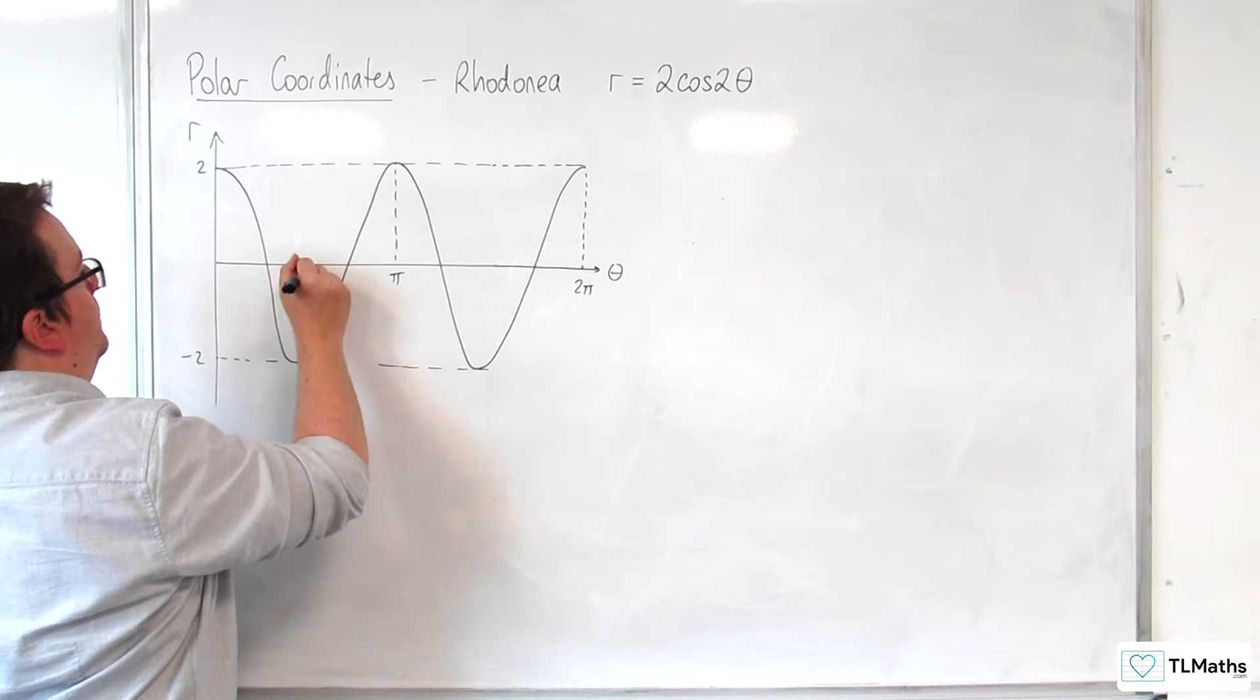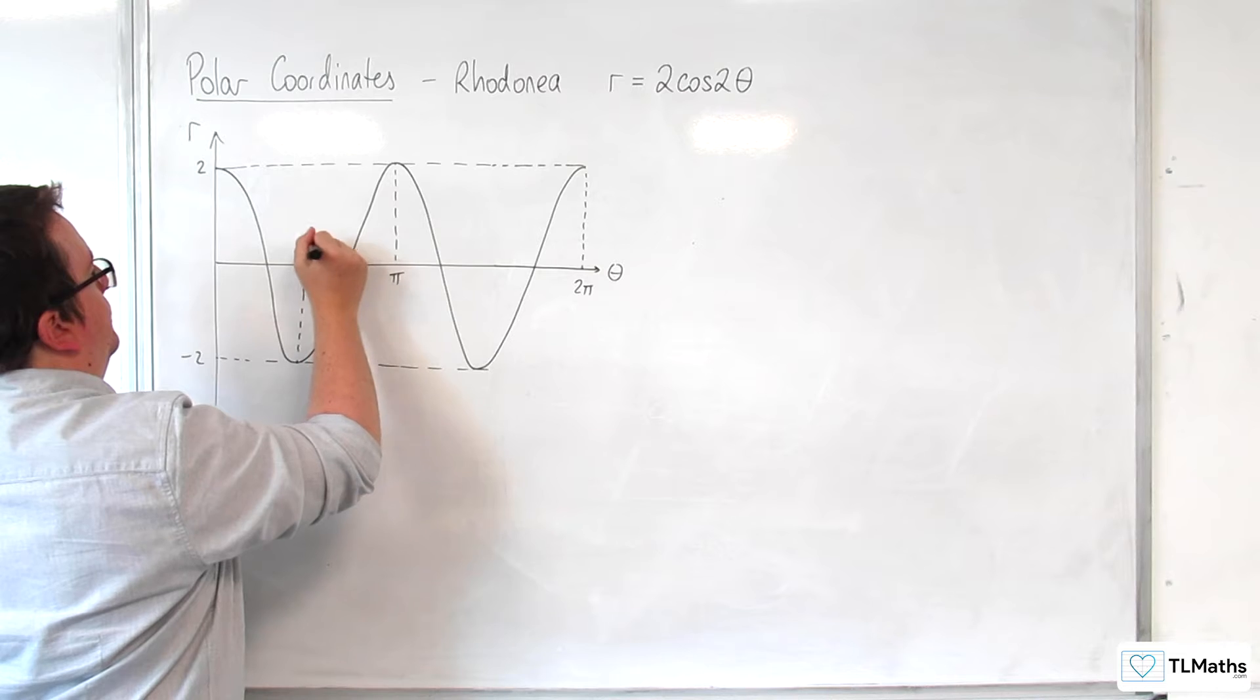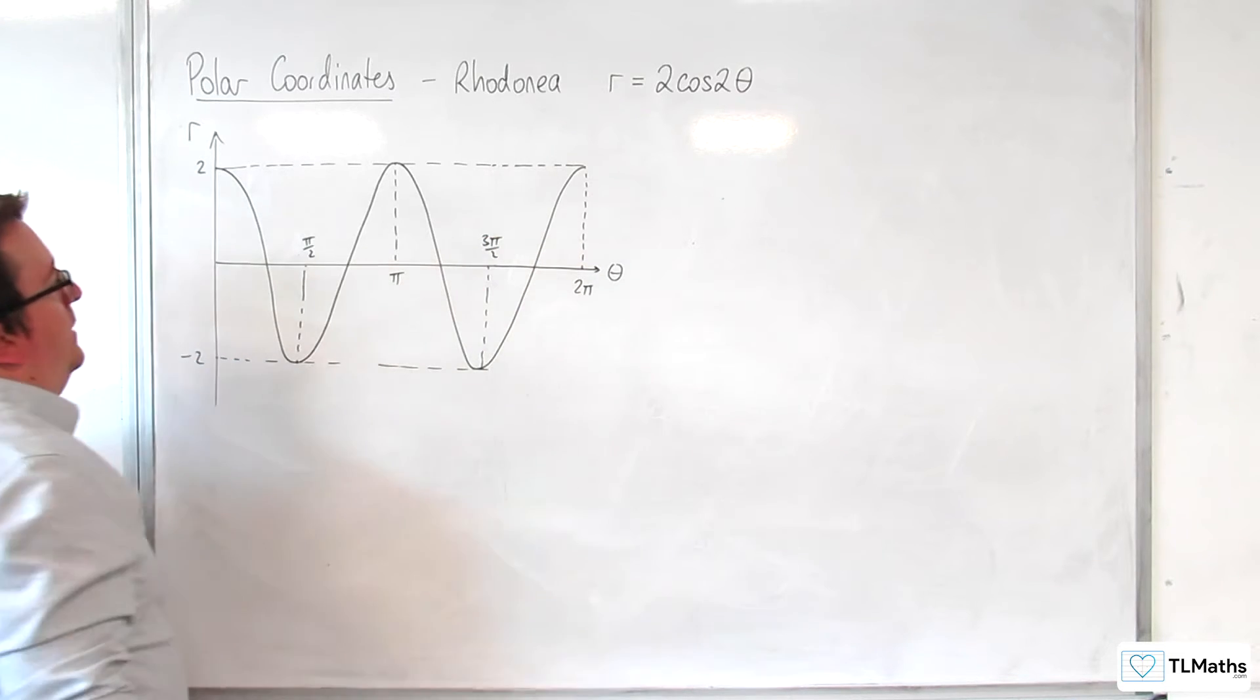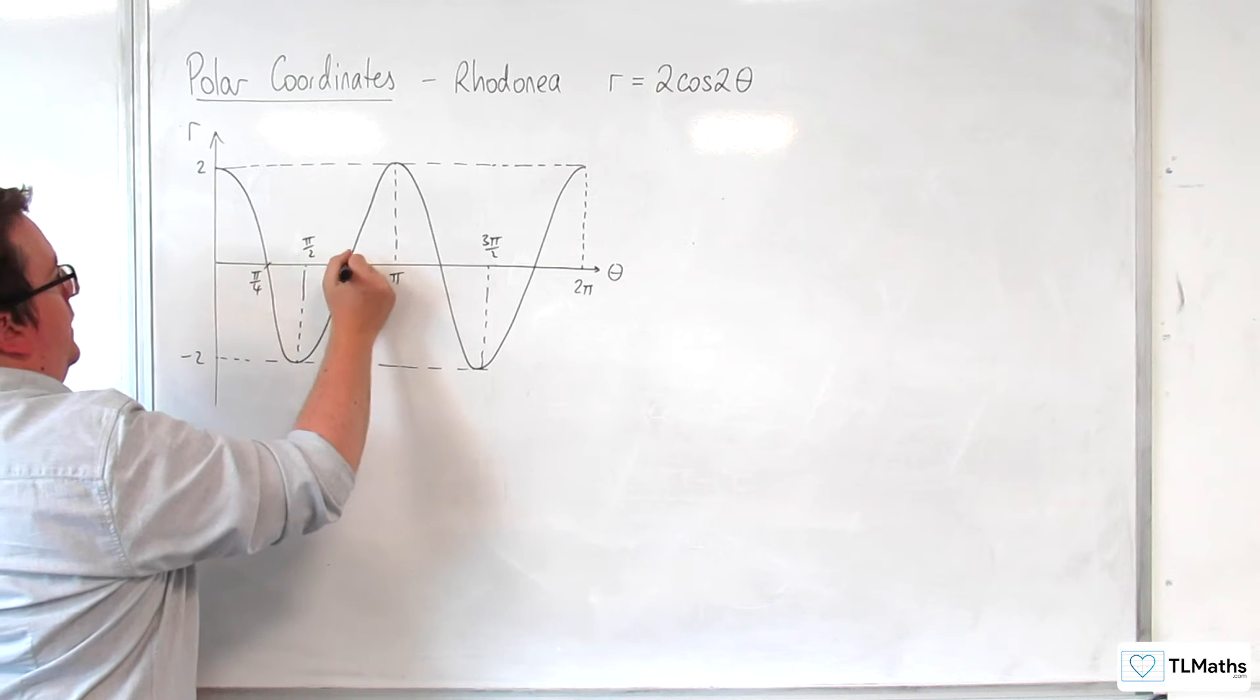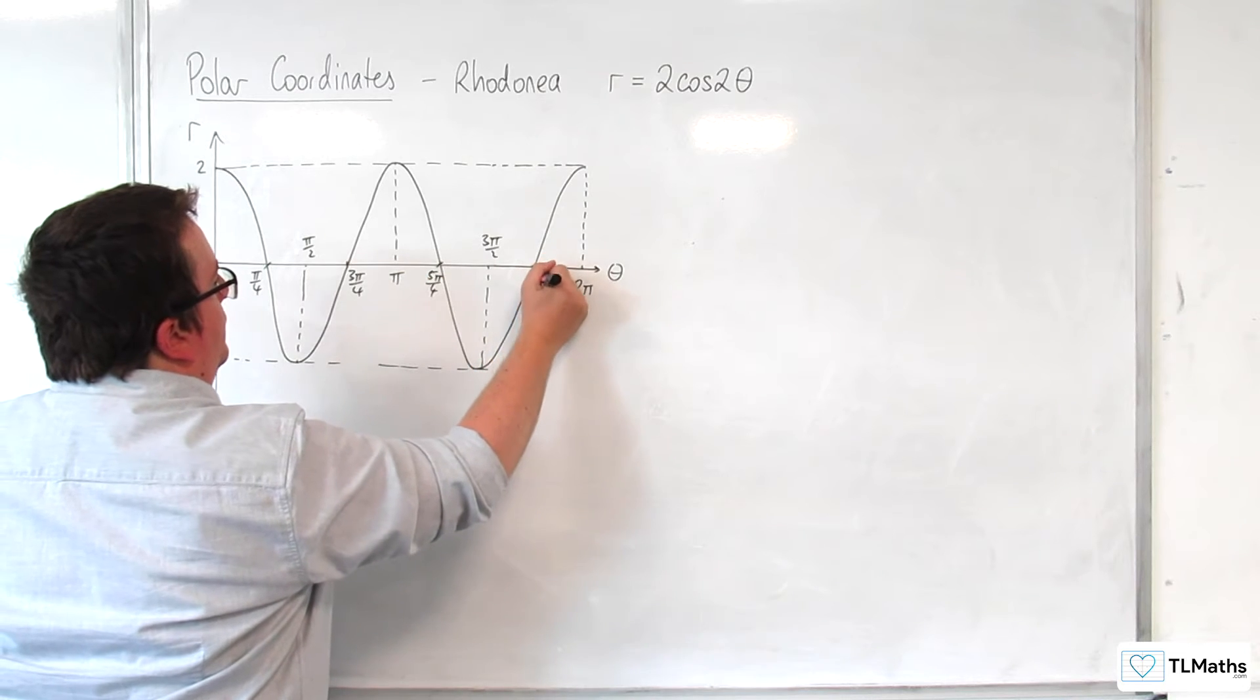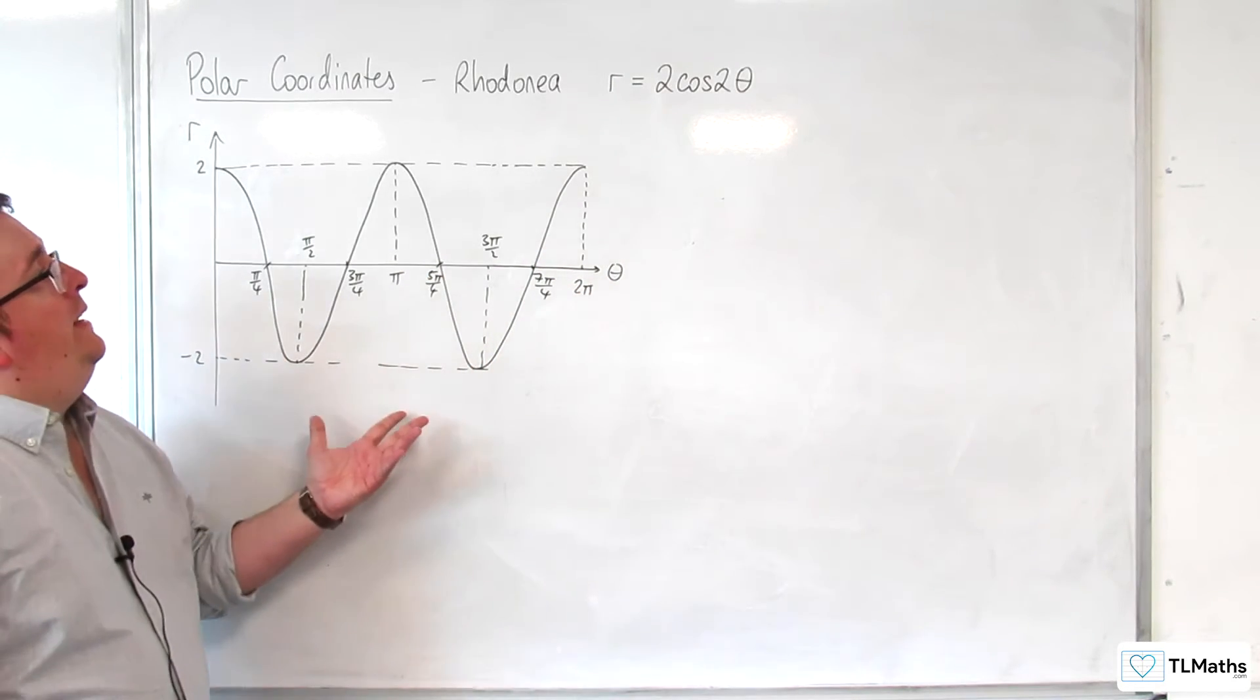That's at pi. That is at pi over 2. Here is pi over 4. Here is 3 pi over 4. Here is 5 pi over 4. And here is 7 pi over 4. So this is our curve.